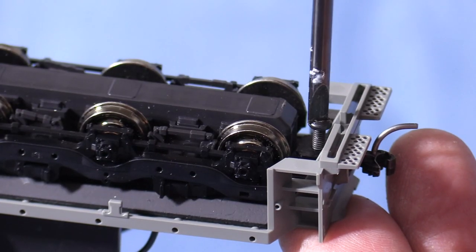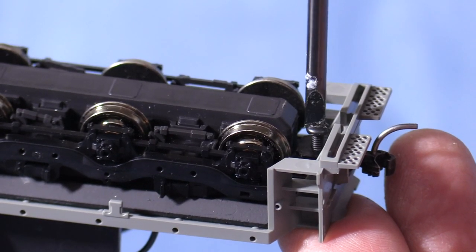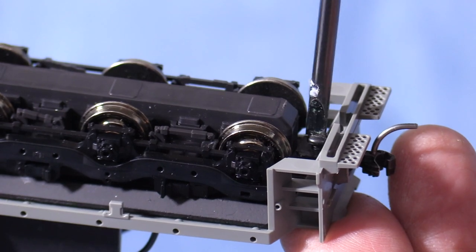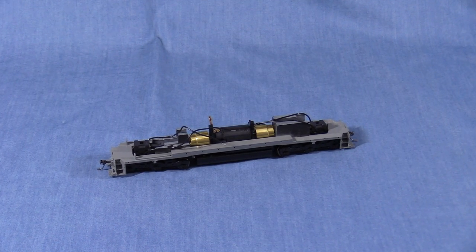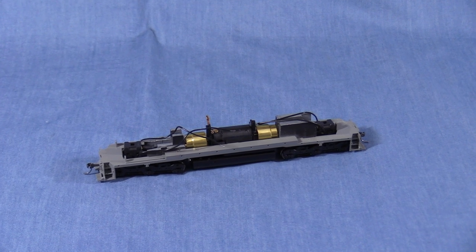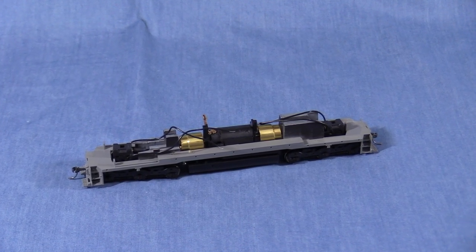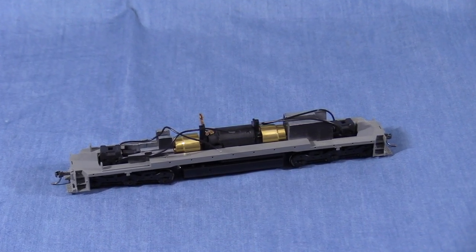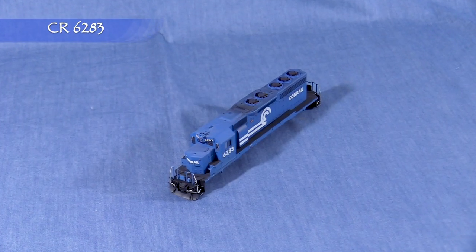I definitely prefer screws to the plastic pins that came with some of the early Kato models. Now's a good time to test fit the couplers. 7482 now has screw mounted couplers on both ends. There's a lot more work to do on the pilots, so I'm not going to worry about the coupler height just yet on this model. Now I need to do the exact same things to 6283.